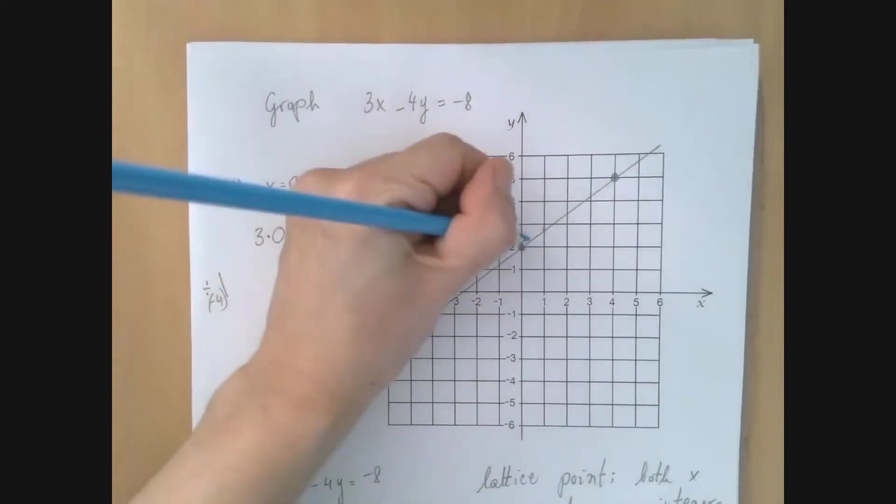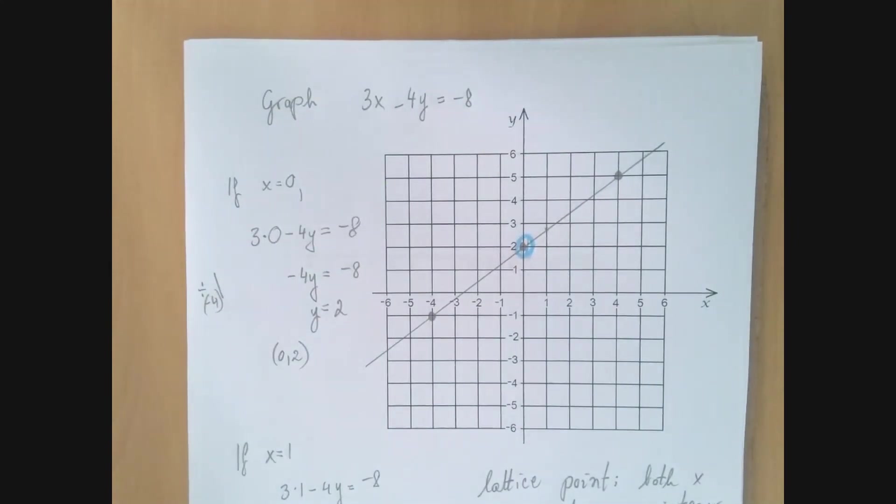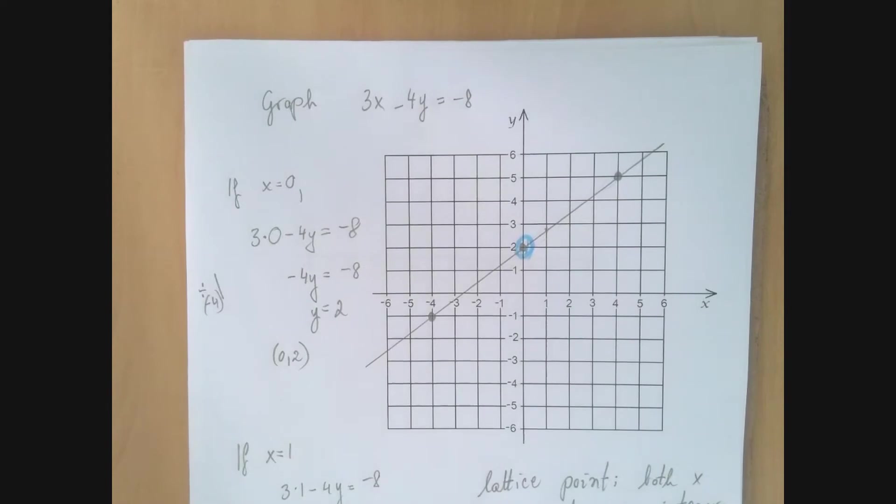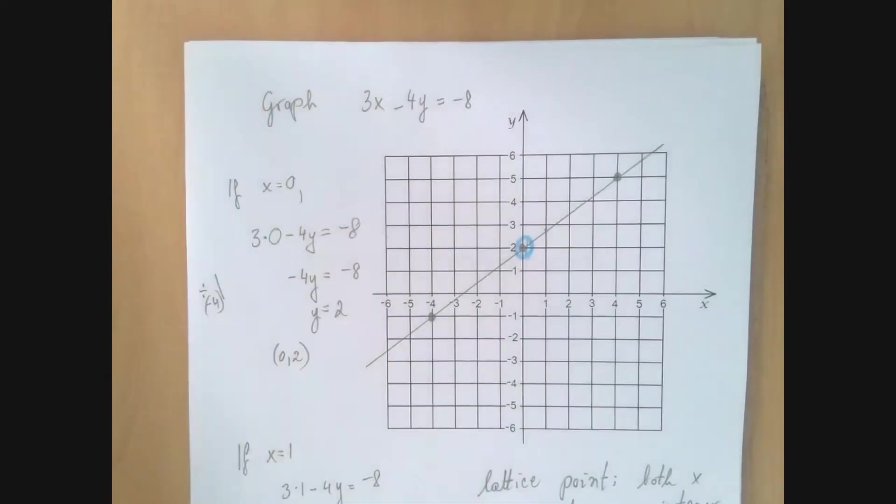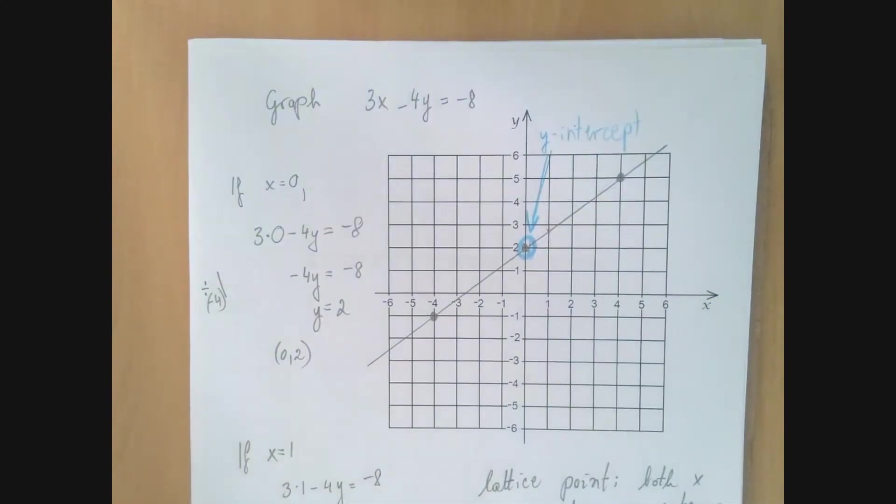So before we go, this point is quite important. In case of equations, when we graph them, we're often interested in the point in which the graph intersects the y-axis. Such a point is called the y-intercept. So the y-intercept in this case is (0, 2).